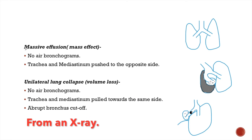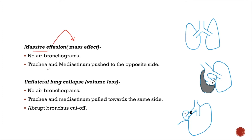Coming to the first cause, which is massive pleural effusion. Massive pleural effusion is characterized by mass effect, which means it causes deviation of trachea and mediastinum towards the opposite side. There will be no air bronchograms in massive pleural effusion because air bronchograms are features of consolidation.